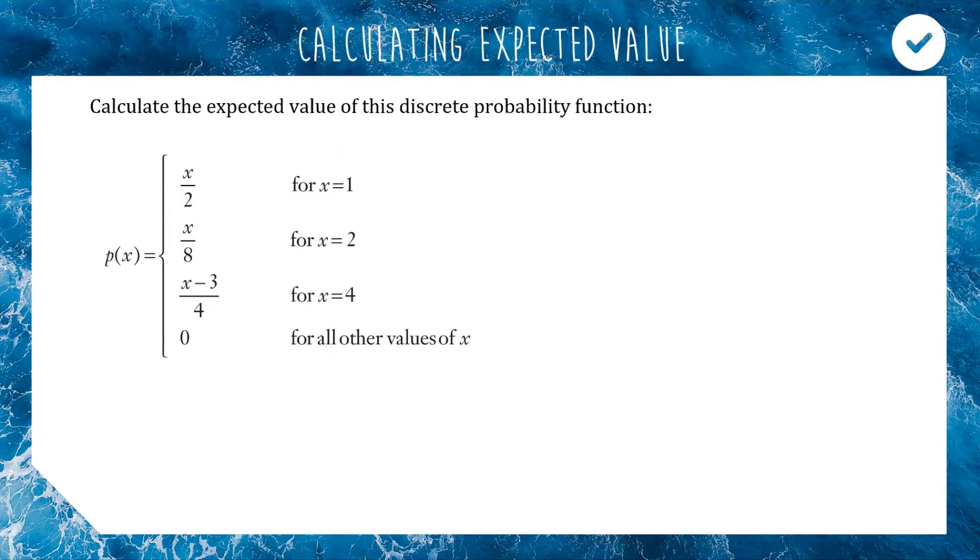Let's do an example of how you calculate the mean or expected value from a probability function. Here we have p(x), our probabilities and inputs. First thing we should do is turn this into a discrete probability function table, which will make things easier for us.